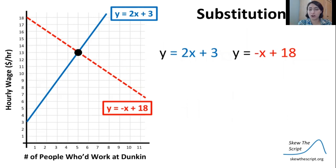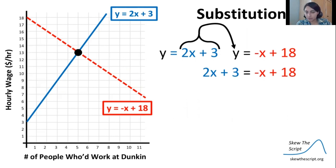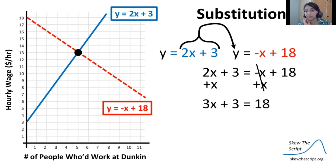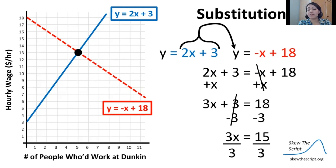We can do this in a couple of ways. Let's start off with substitution. Because both of these equations are set equal to y, we can take one of them and plug it in for the y in the other equation. So if we substitute in our 2x plus 3, that's going to give us: 2x plus 3 equals negative x plus 18. Now we just have a single variable equation. We're going to add our negative x over to the other side of the equation. That's going to leave us with 3x plus 3 equals 18. Then we're going to get the 3 over to the other side, leaving us with 3x equals 15. Our last step is to divide through by 3, and that gives us x equals 5.